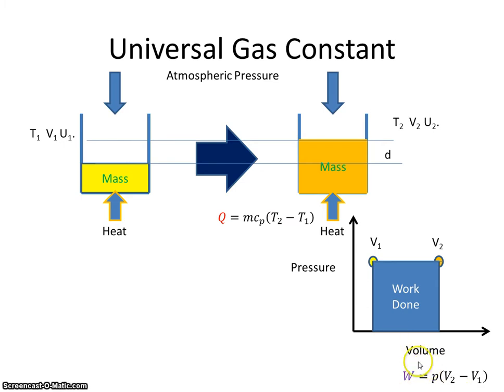Previously we've shown in a different video that the work done on a system is equal to pressure times the change in volume. So the volume has changed from here to here, V1 to V2 in this example.